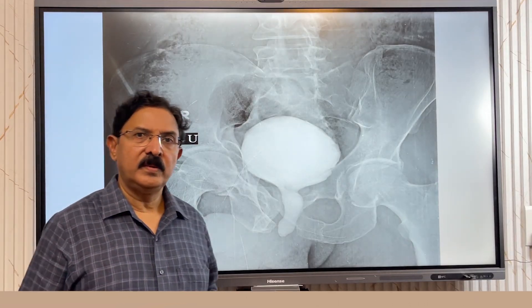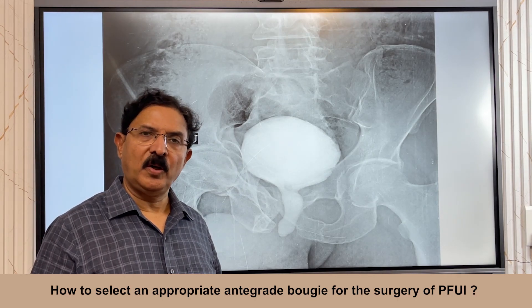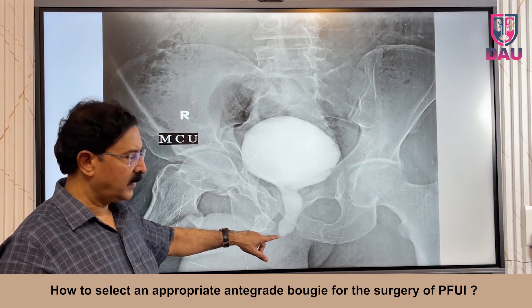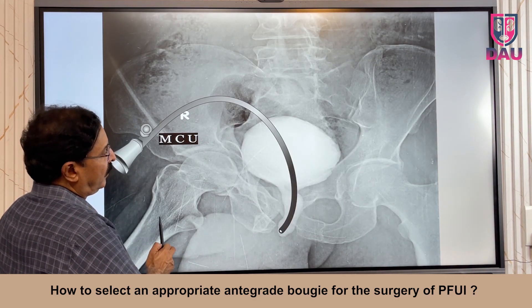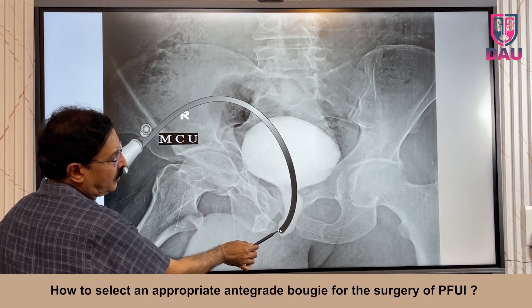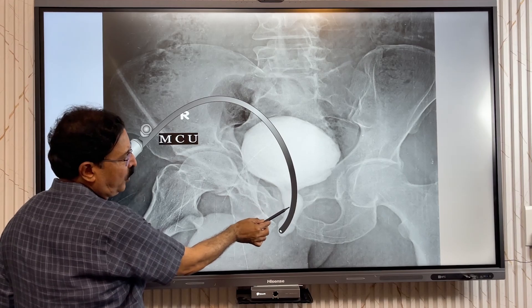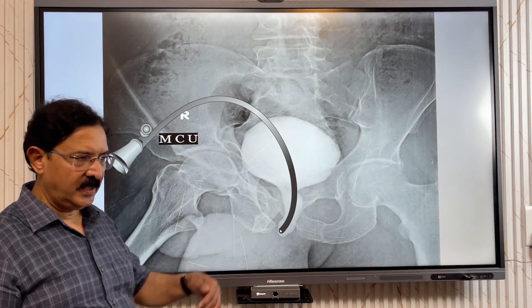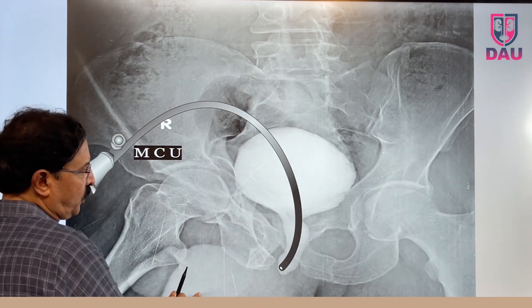As you know, it is very crucial in the operation of urethroplasty of such a case to know the end-to-end anastomosis. For this, we all use an anterogradely placed antegrade sound bougie which comes from the suprapubic track through the bladder neck into the prostatic urethra, and it should come down as far as the apex — the end. And how do you select this bougie?